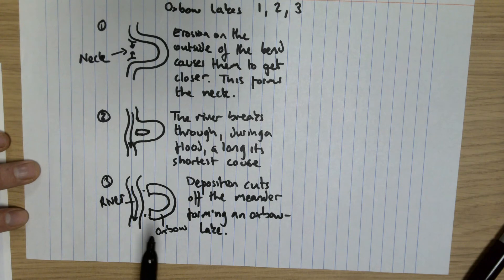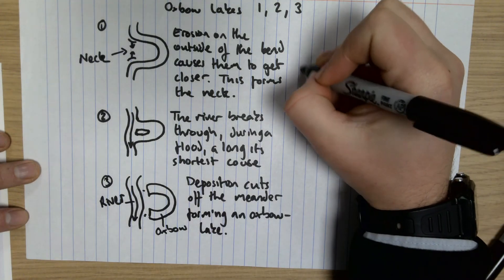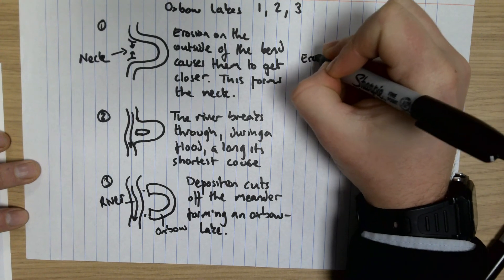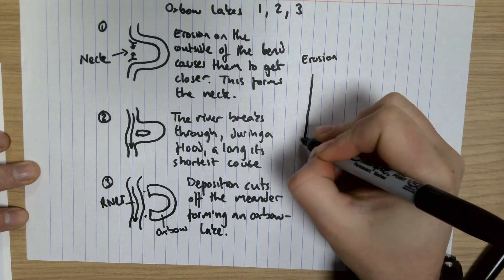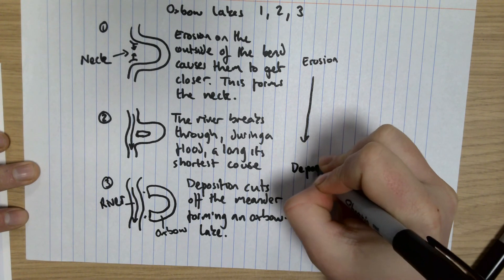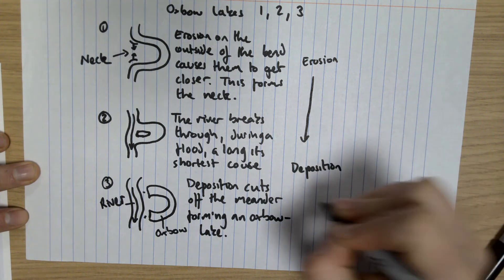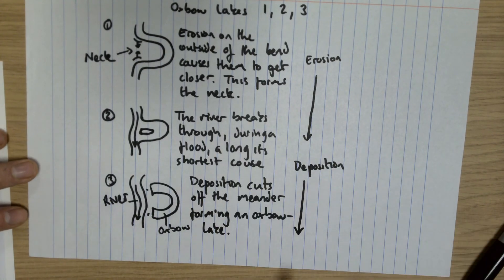So remember we have processes here of erosion along here, which then start to eventually migrate into kind of deposition along here. It's quite an interesting landform because you see that change from erosion to deposition.